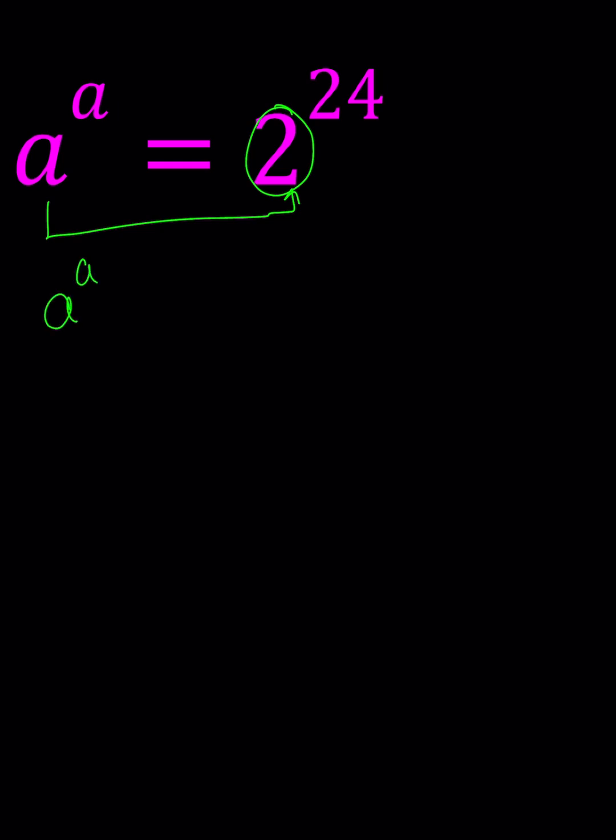Okay, so we can now write this as 2 to the power 3 times 8, which is 2 to the power 24, and then we can kind of put this 3 inside and put the 8 outside. Where does that come from?